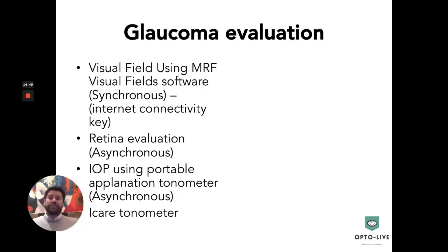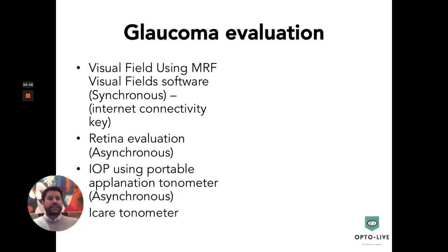For glaucoma evaluation, we have been using MRF visual field software. This can be done live, but internet connectivity is very important since the stimulus is very small — that is the main challenge with MRF visual fields — but it can be done live over Zoom or Google Meet to assess the patient's visual field. The IOP can also be measured using applanation tonometry, and patients can be suggested to keep iK tonometers at home. Though expensive, we hope in the future these devices will become as prevalent as a standard blood pressure machine or glucose meter.